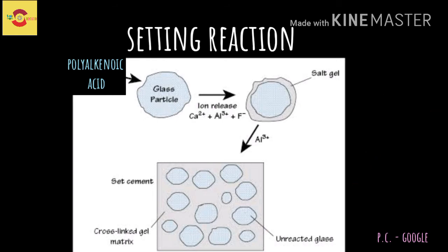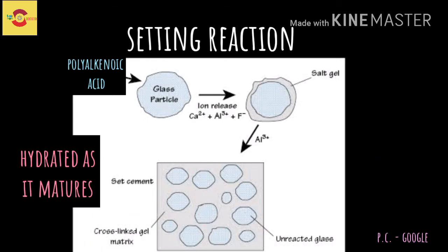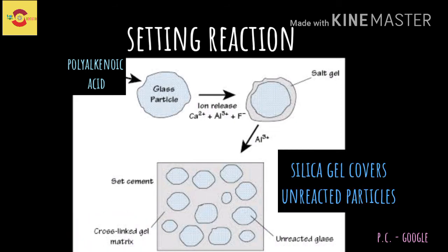The cross-linking phase becomes hydrated over time as it matures. A silica-rich gel is formed on the surface of the glass particles, sheathing the undissolved portion of the glass particles.